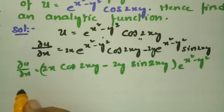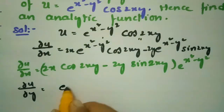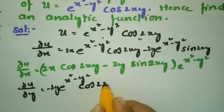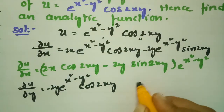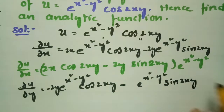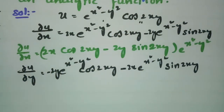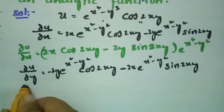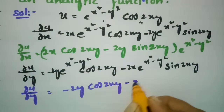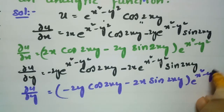Next, taking the partial derivative with respect to y, that is ∂u/∂y. Again applying the product rule: the derivative of e^(x²-y²) with respect to y gives a factor of minus 2y, leaving cos(2xy), and then leaving e^(x²-y²) and differentiating cos(2xy) gives minus sin(2xy) times 2x. So ∂u/∂y equals minus 2y·cos(2xy) minus 2x·sin(2xy), all multiplied by e^(x²-y²).